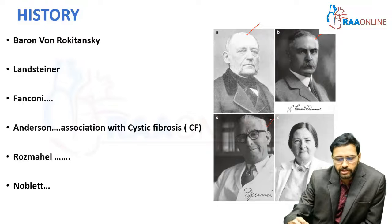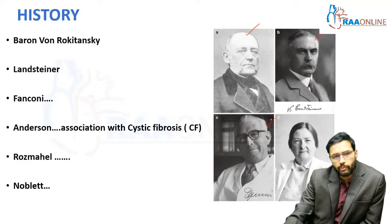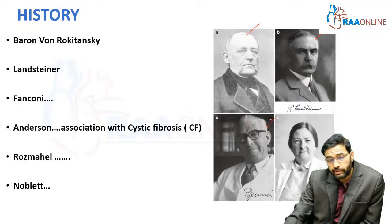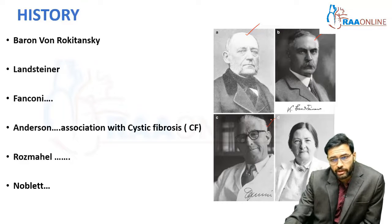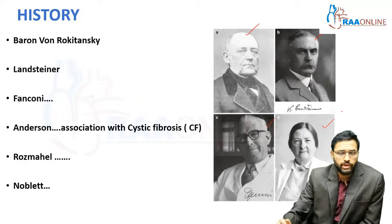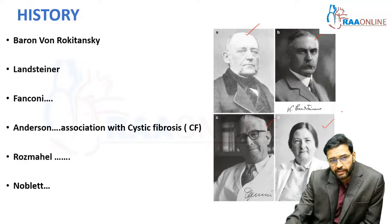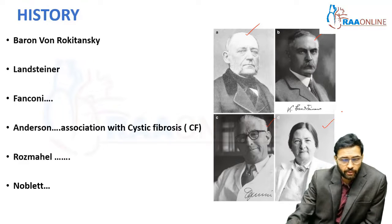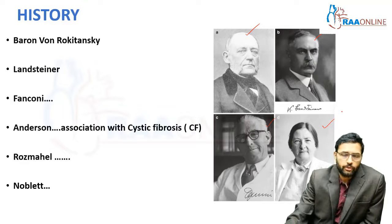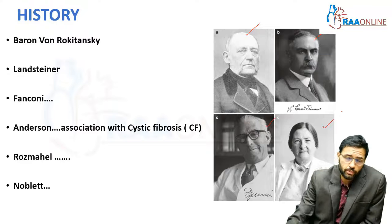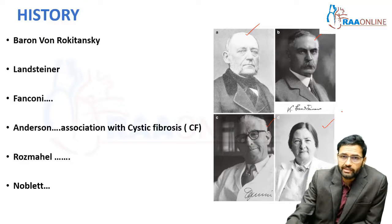Dr. Fankani is the one who actually described cystic fibrosis in a child with pancreatic insufficiency. And Anderson put two and two together to form four by saying that there is a common association of meconium ileus with cystic fibrosis. Rosa Mahal is a very important person because he was the one who was able to localize the CFTR gene to chromosome 7.